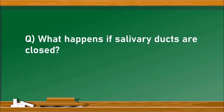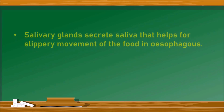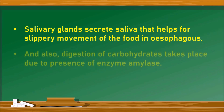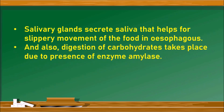Next question: what happens if salivary ducts are closed? The salivary gland secretes saliva that helps for the slippery movement of food in the esophagus, and also helps for carbohydrate digestion partially, due to the presence of the enzyme amylase.